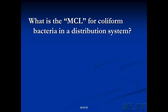What is the MCL for coliform bacteria in the distribution system? Well, this is a little bit of a trick question because there is no MCL, per se, for coliform bacteria — that's why we put the MCL in quotes. What we have is 5%. That is what we can tolerate; anything beyond that is a violation of the total coliform rule. And that's 5% in a month of routine samples.